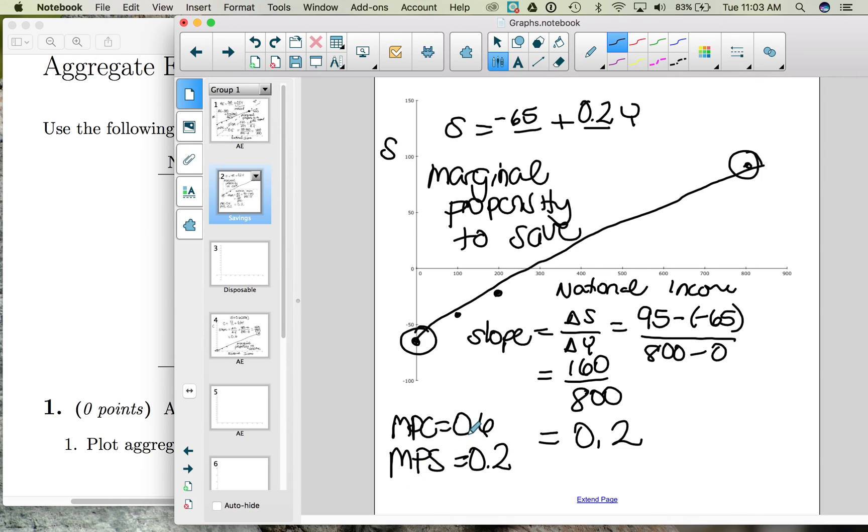By having those two bits of information, we know that the marginal tax rate must be 0.2 as well. Because when you have income, you can do three things with it. You can spend it, you can save it, you pay net taxes. So if for every dollar of income, we spend 60 cents and we save 20, then the remaining 20 cents must go to taxes.